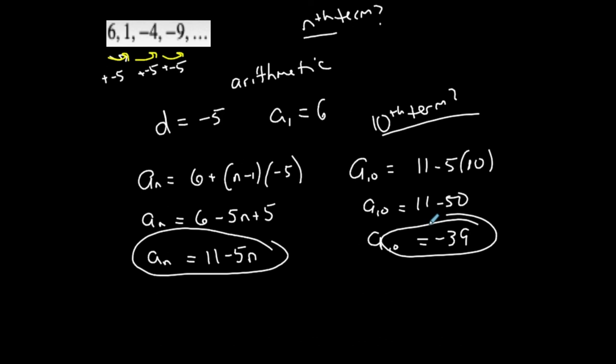I could be given different things: a1 and d, a sequence, or a recursive formula. But at the end of the day, if it follows a pattern where I'm adding the same number to each term to get to the next one, it's arithmetic, and I can find the nth term formula in explicit form so that I can determine any term number I want.